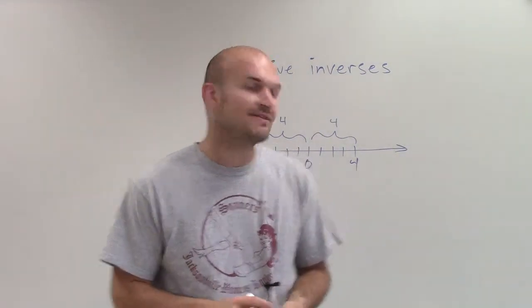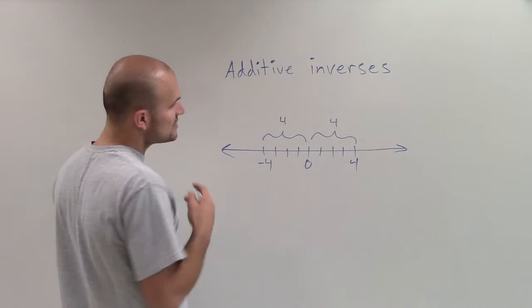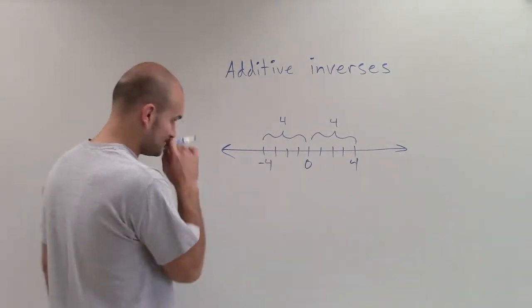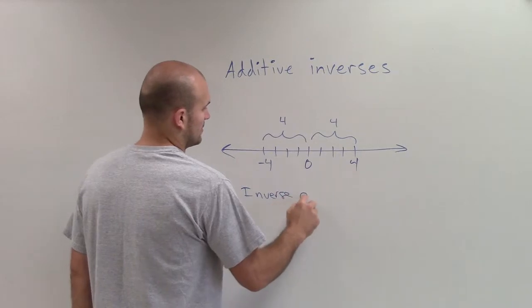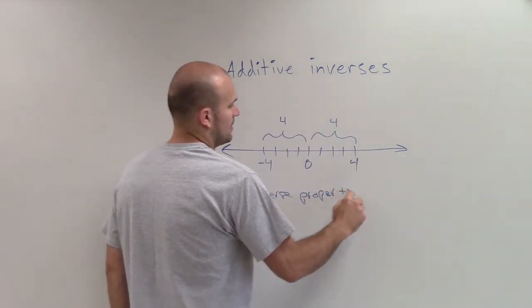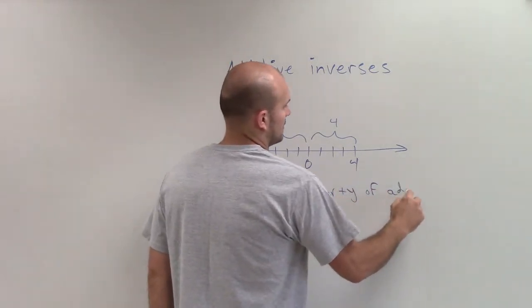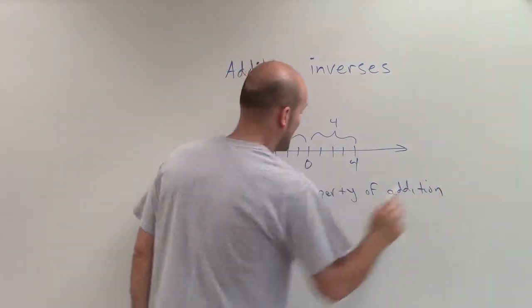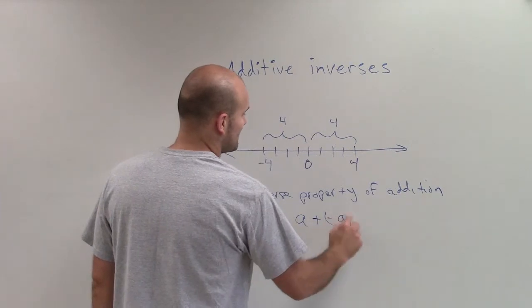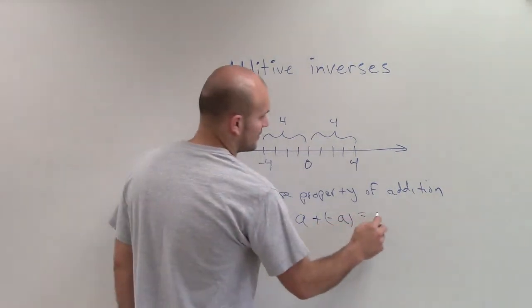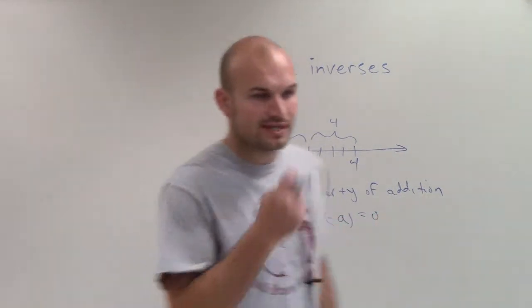And we call these additive inverses because by using the inverse property of addition, what that states - as I got to write this whole thing out - the inverse property of addition states that for any real number, plus the opposite value of that number, is going to equal 0.